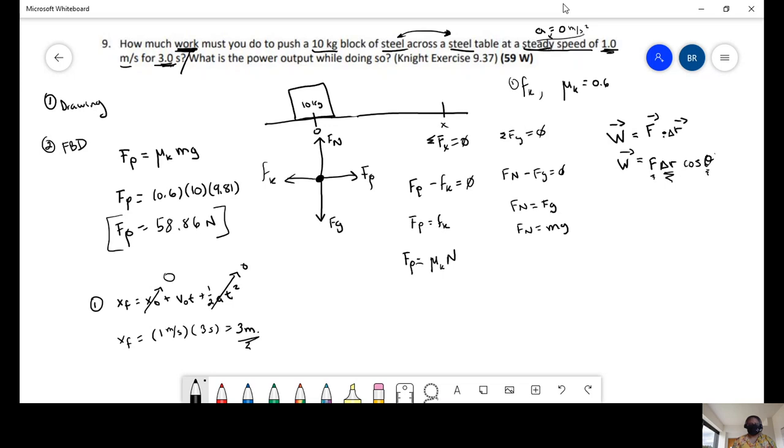Now the angle. The angle that we're going to use is the angle between the movement of the object, so this is moving in the x, and the force that's applied. So the force is applied in the x-axis. So these two have a degree of zero. Cosine of zero equals 1.